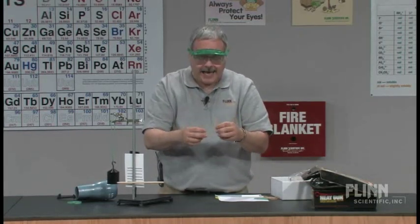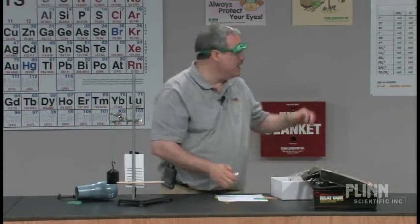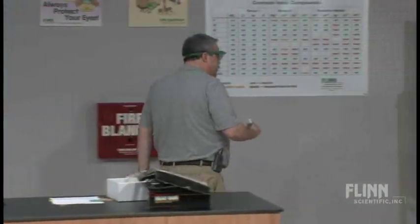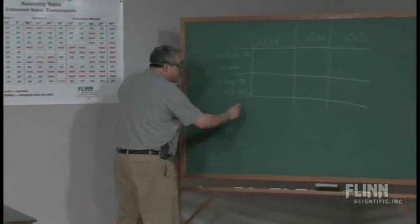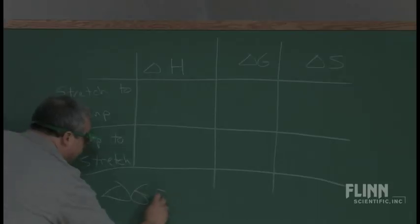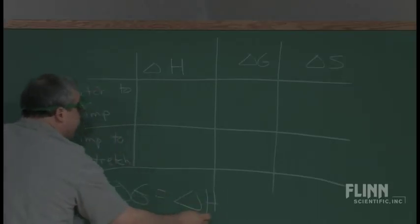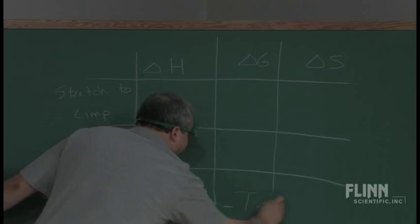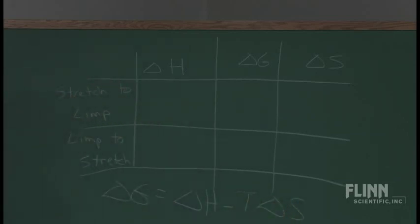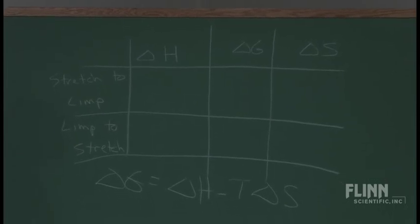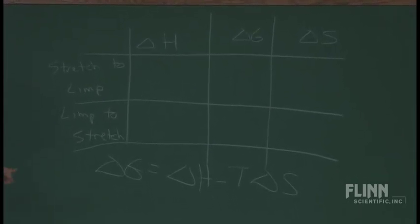So what we have over here on the board is an equation that we're going to use involving Gibbs free energy. Where we're going to do delta G is equal to delta H minus T delta S. Well now let's look at this. The delta G, this is what we're looking at.